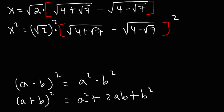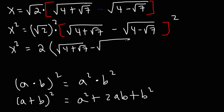So this is what we currently have at this point. The square root of 2 squared becomes the square root of 4, which simplifies to 2. Now we need to FOIL that expression, so I'm going to write it twice: the square root of 4 plus the square root of 7, minus the square root of 4 minus the square root of 7, and then times itself.